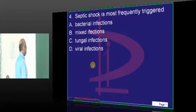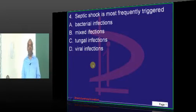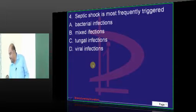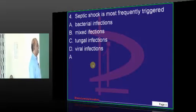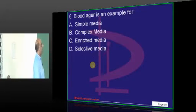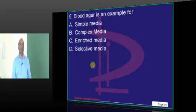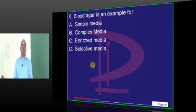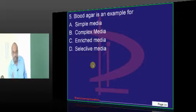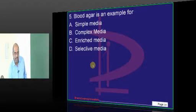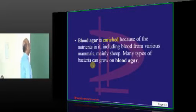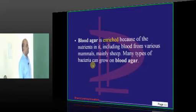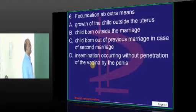Septic shock is generally because of bacterial infections, which are gram-negative infections — that is what you need to remember. Blood agar: do you call it selective, enriched, or complex? All of them look more or less similar, but classically it is an example of an enriched medium because of the nutrients present inside it.